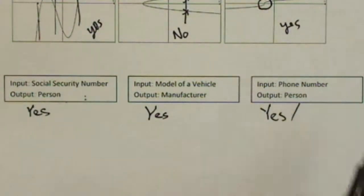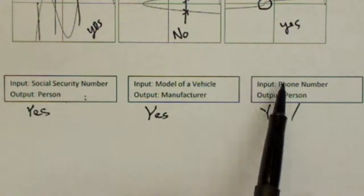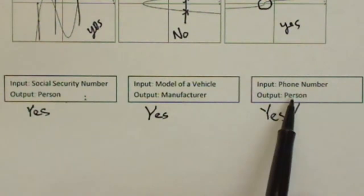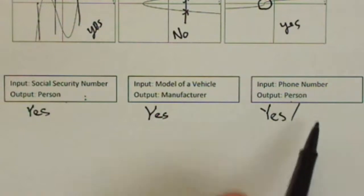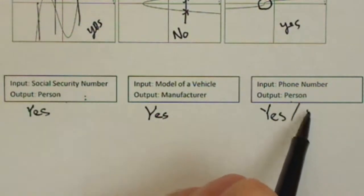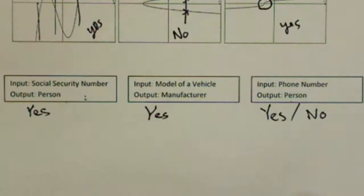Now, what if the phone number is for a home phone? Then if you call the home phone, you may not get one unique person. You may get anybody who lives at the home. So, if we define the phone number to be a home phone, it could not be a function.